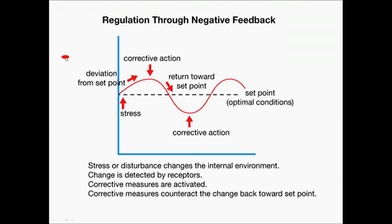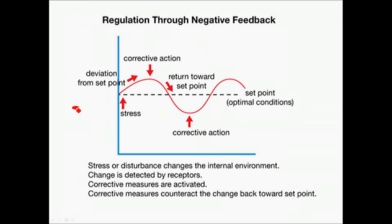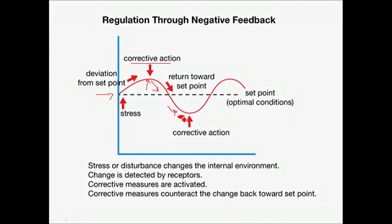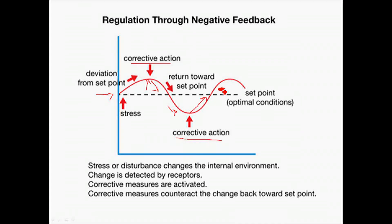Here is a slide showing the regulation of a value through negative feedback. The value fluctuates around a set point, represented by a dotted line. As the value increases toward the top of the range, the body senses this and takes a corrective action opposite to the stimulus, driving the value back toward the set point. However, it doesn't stop at the set point — it goes below it to the bottom limit of the range. The body detects this and raises it again, but it overshoots the set point and hits the top of the range again. This continues repeatedly in the body.